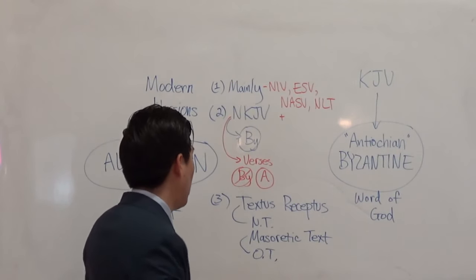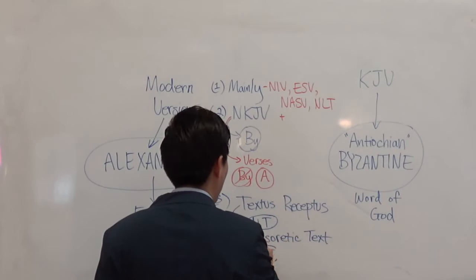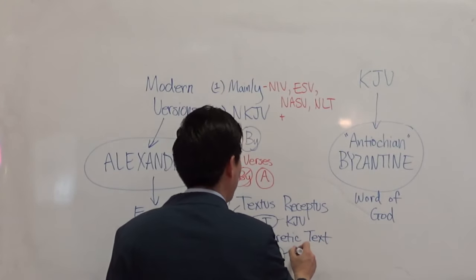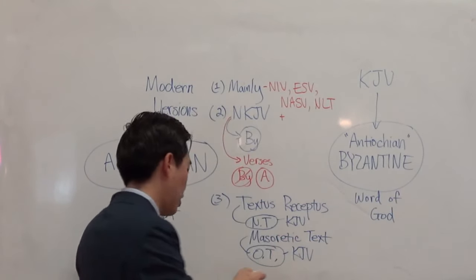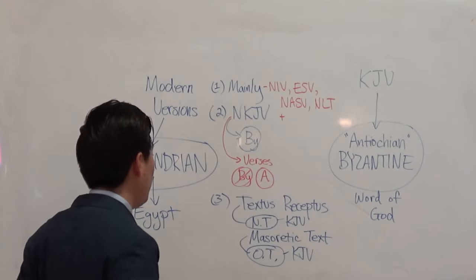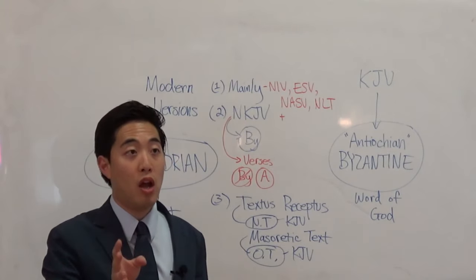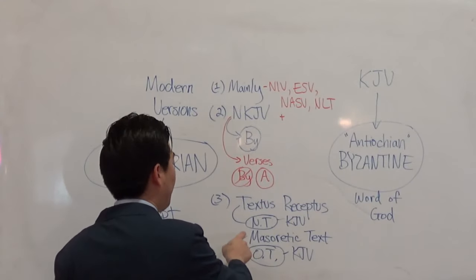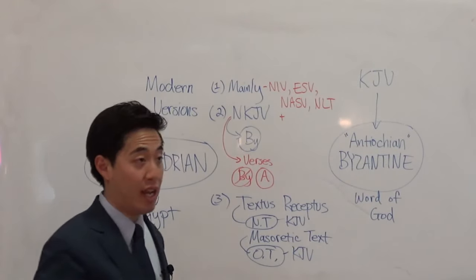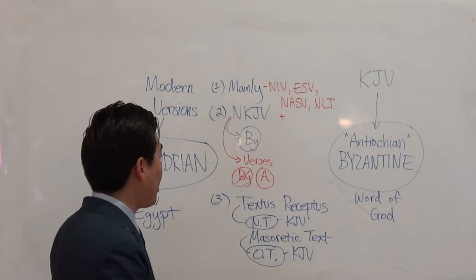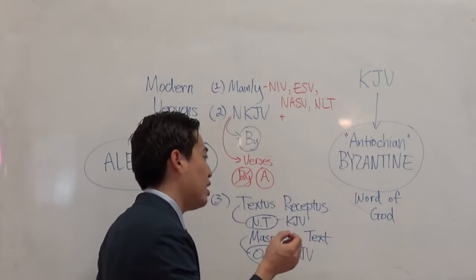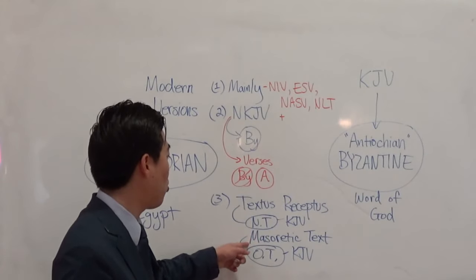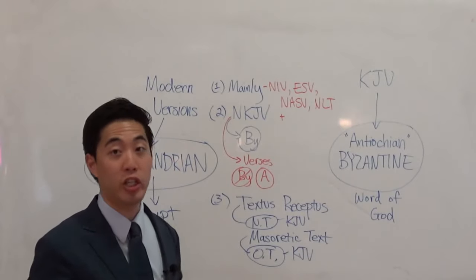Secular scholars know the New Testament of the King James Version comes from the Textus Receptus and the Old Testament from the Masoretic text. Modern secular scholars will try to point out verses in the Textus Receptus and in the Masoretic text that differ from the KJV — and by doing that, they try to prove the King James Bible has errors and is not infallible.